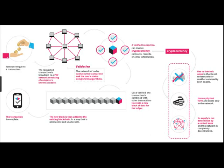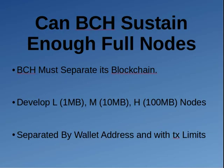The way you do this is by running a parallel blockchain. A parallel blockchain is like a normal blockchain — you just split it up into parts. When we're talking about whether Bitcoin Cash can sustain enough full nodes, the answer is yes, but Bitcoin Cash has to separate its blockchain, meaning it just needs to run a parallel blockchain.